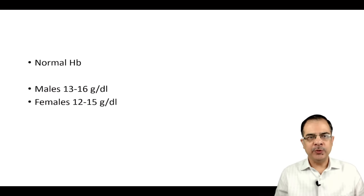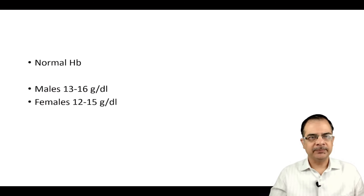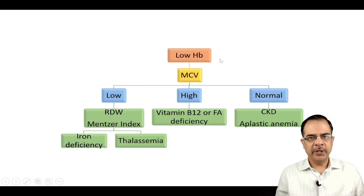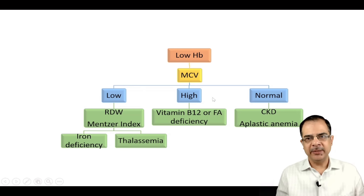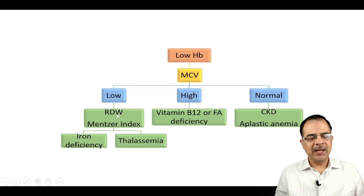Starting with the normal hemoglobin range: in males it is 13 to 16, and in females 12 to 15, though different textbooks and guidelines may give different ranges. Whenever a patient with low hemoglobin comes to us, the next step is to look at the MCV — mean corpuscular volume. The normal range is 80 to 95 fL. If it is low, it is microcytic anemia; if high, macrocytic; if normal, normocytic.